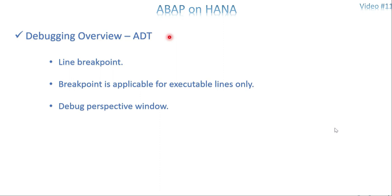What happens whenever you execute and the program has a breakpoint — it will automatically switch the window from your ABAP development editor to the debugging perspective window. It always shows a pop-up, but you are able to ignore it. I'm keeping that pop-up enabled to show you in this video; otherwise it's a one-time activity — you have a checkbox and it won't ask every time to switch between your ABAP and debug perspective window.